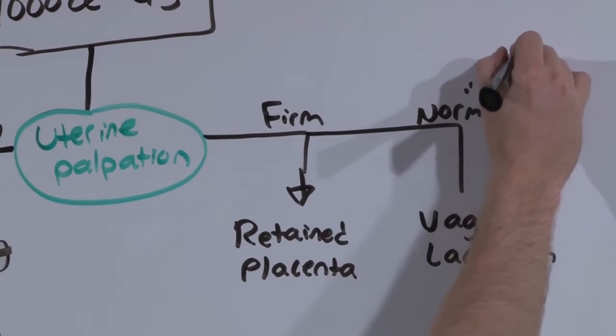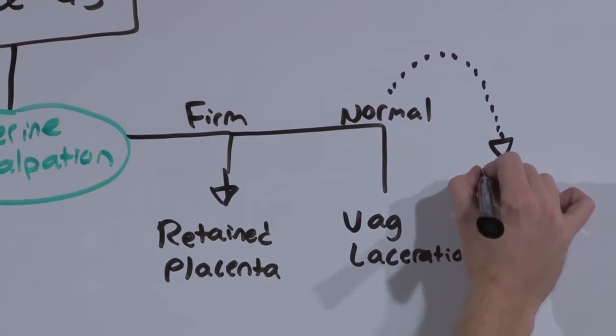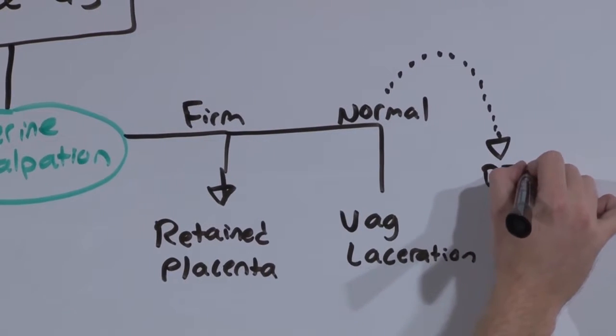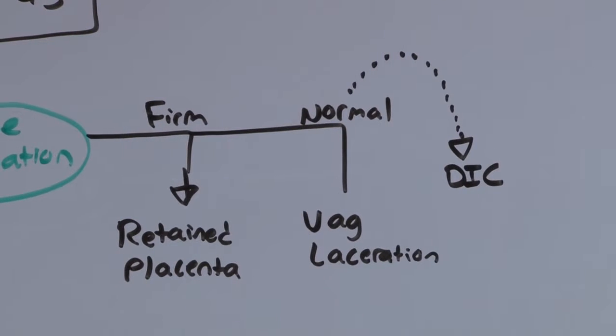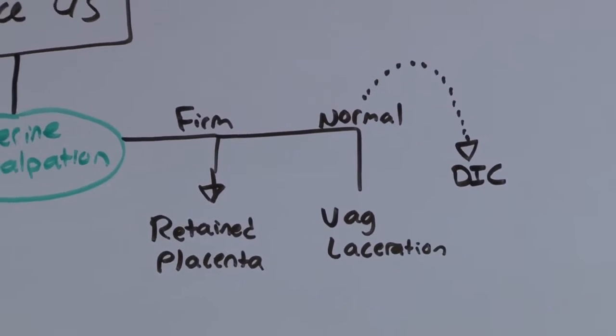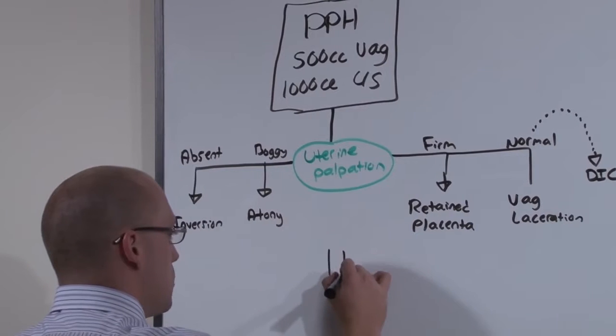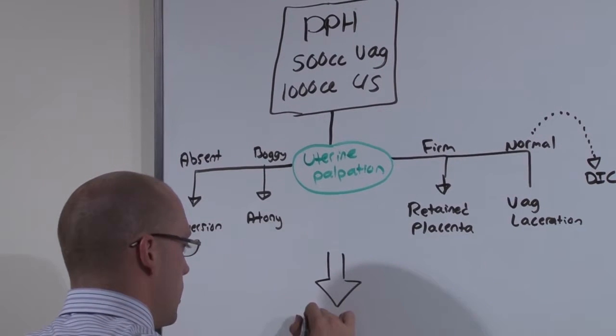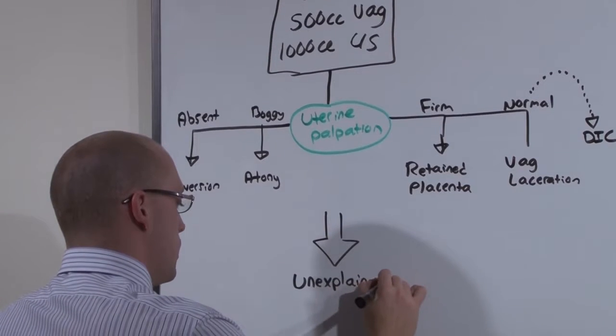All the while, don't forget, postpartum bleeding can be a product of disseminated intravascular coagulation. And even though you may try to find the source of bleeding, if she continues to bleed a significant amount and you cannot find the correct cause, unexplained bleeding is the final diagnosis. And this we covered in the GYN pelvic anatomy lecture.